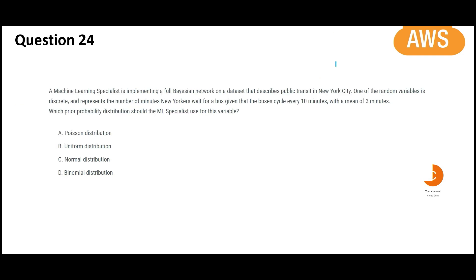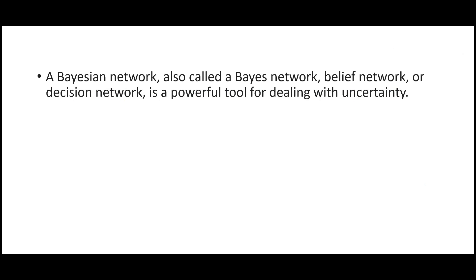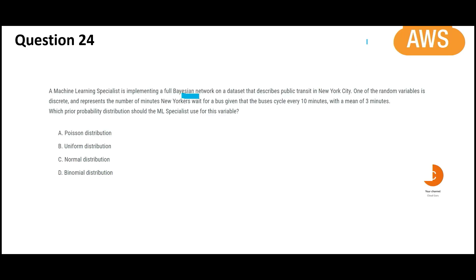Next question here. You are a specialist and you are implementing a Bayesian network. It is also called Bayes network. If you are dealing with uncertainty, then we use this. Is there uncertainty? Yes. There are random variables. It represents the number of minutes new workers wait for bus. Now you have to tell what probability distribution you will use. The variable is random. Random variable is discrete.